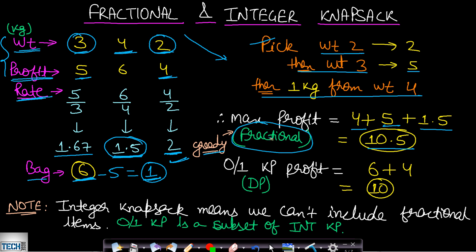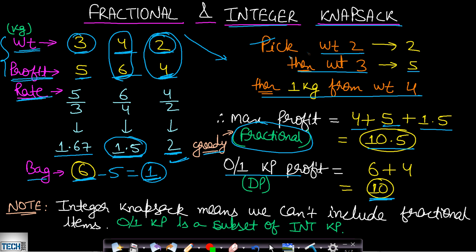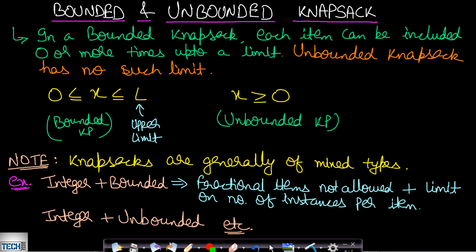This fractional knapsack uses a greedy algorithm, not dynamic programming. If we solve the same example using 01 knapsack, the profit would be 6 + 4 = 10, by including the second and third items entirely. The profits differ because the two approaches apply different logic. 01 knapsack applies integer knapsack logic — we must include or exclude items entirely. 01 knapsack is a subset of integer knapsack; bounded and unbounded knapsacks also fall under integer knapsack variations.